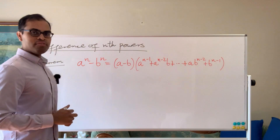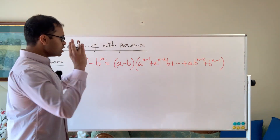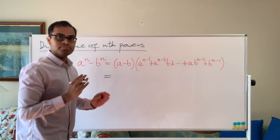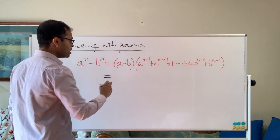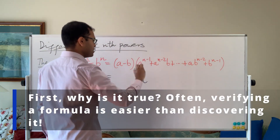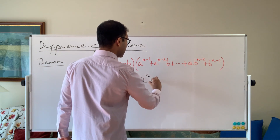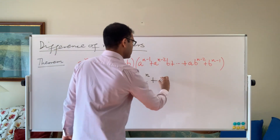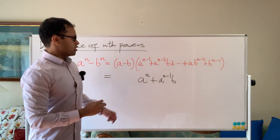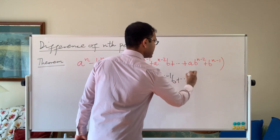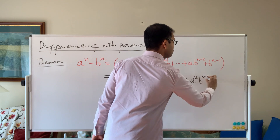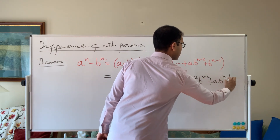Let's first dive into explaining why this is true. We're going to use the distributive law — writing a times the second parentheses minus b times the second parentheses. So a times the second parentheses gives us a to the n plus a to the n minus 1 b, and then you keep going: plus dot dot dot plus a times a b to the n minus 2, which is a squared b to the n minus 2, plus a b to the n minus 1.